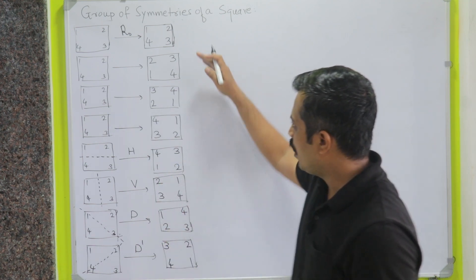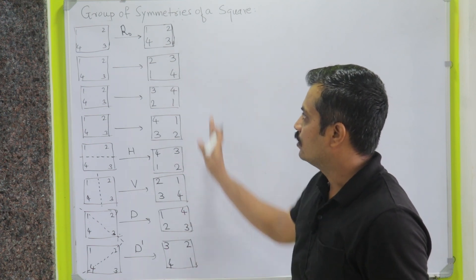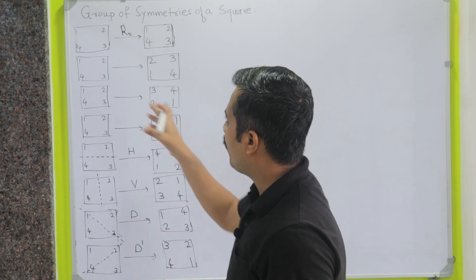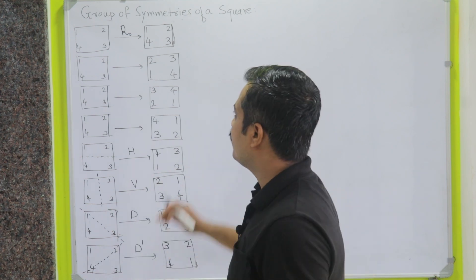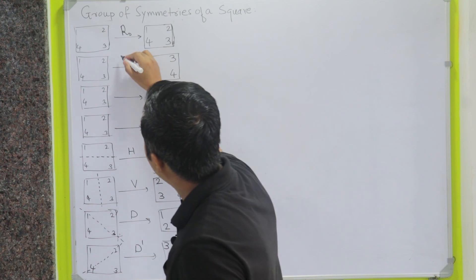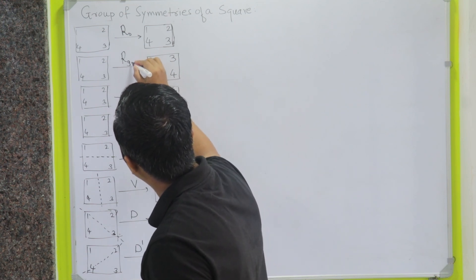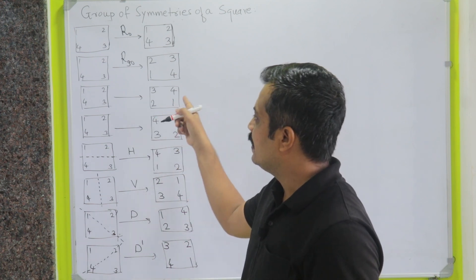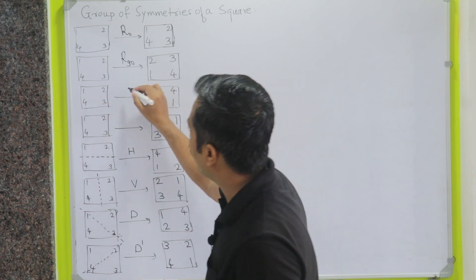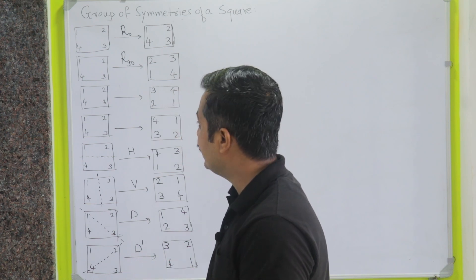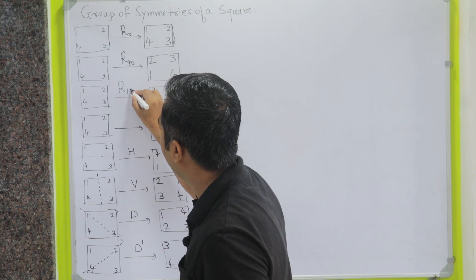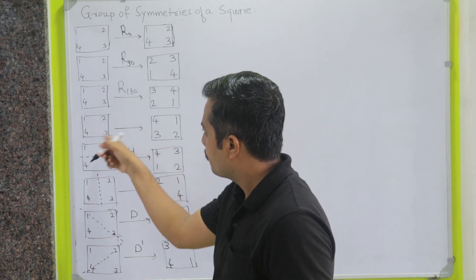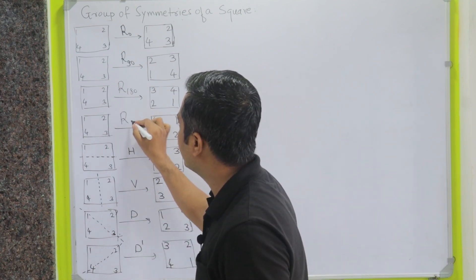The next symmetry, R90, is obtained by rotating the original square 90 degrees in the anti-clockwise direction. Next, R180 is obtained by rotating the original square 180 degrees in the anti-clockwise direction. And R270 is obtained by rotating the square 270 degrees in the anti-clockwise direction.